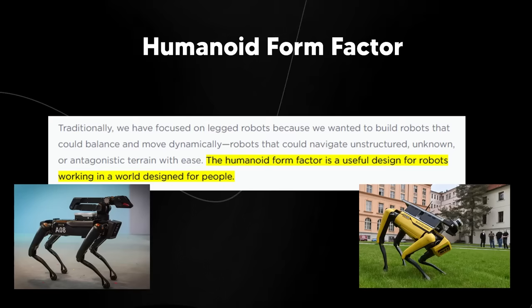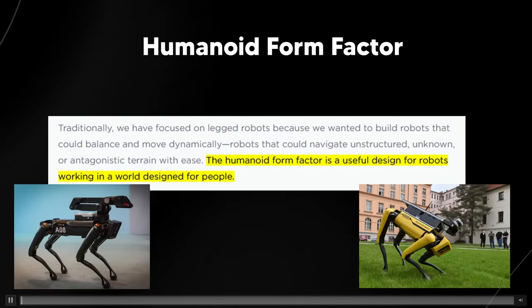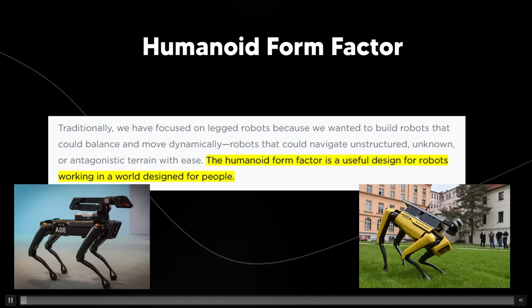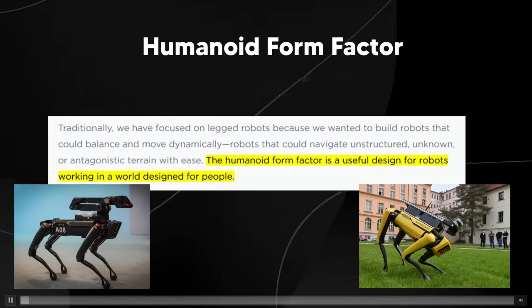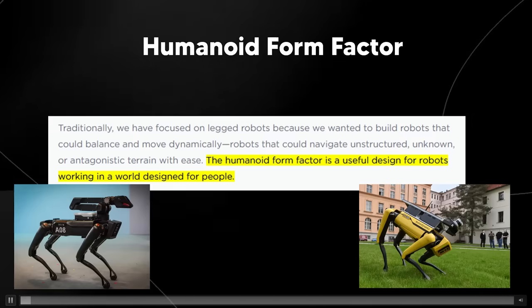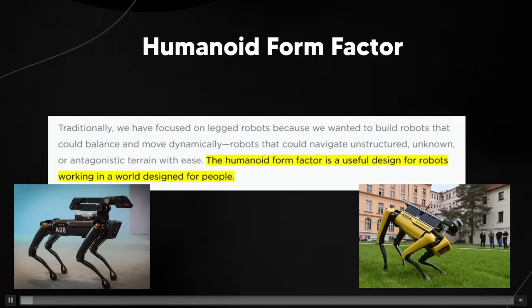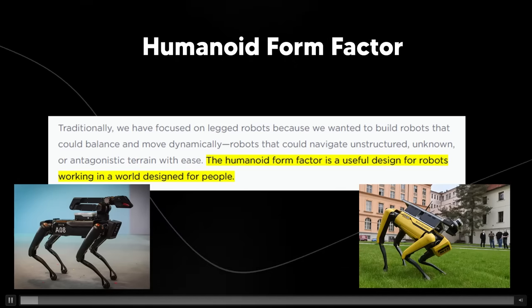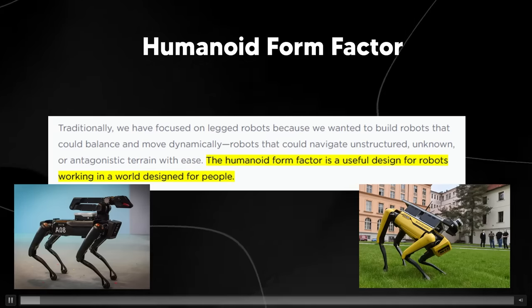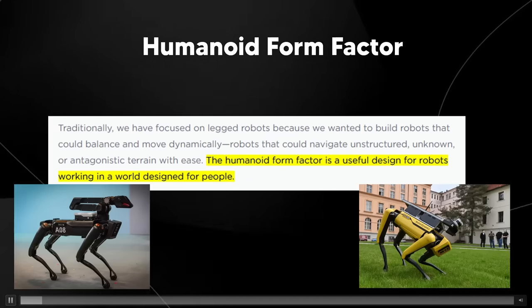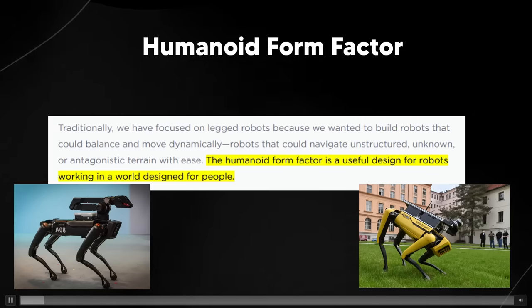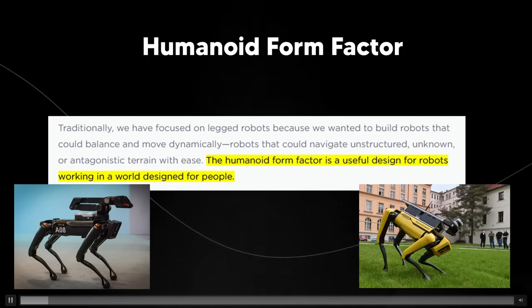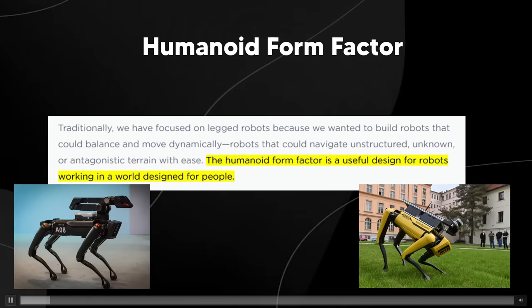Something that we always get in the robotics community is why on earth do they make robots that are in the humanoid form factor? They say traditionally we are focused on legged robots because we wanted to build robots that could balance and move dynamically. Robots that could navigate unstructured, unknown or antagonistic terrain with ease. And the main factor here, the main reason that most people don't seem to think about because most people decide to question why these robots are humanoid because some people just think it just because they look cool. That's not the reason. The reason is it's because the world is designed for humans.